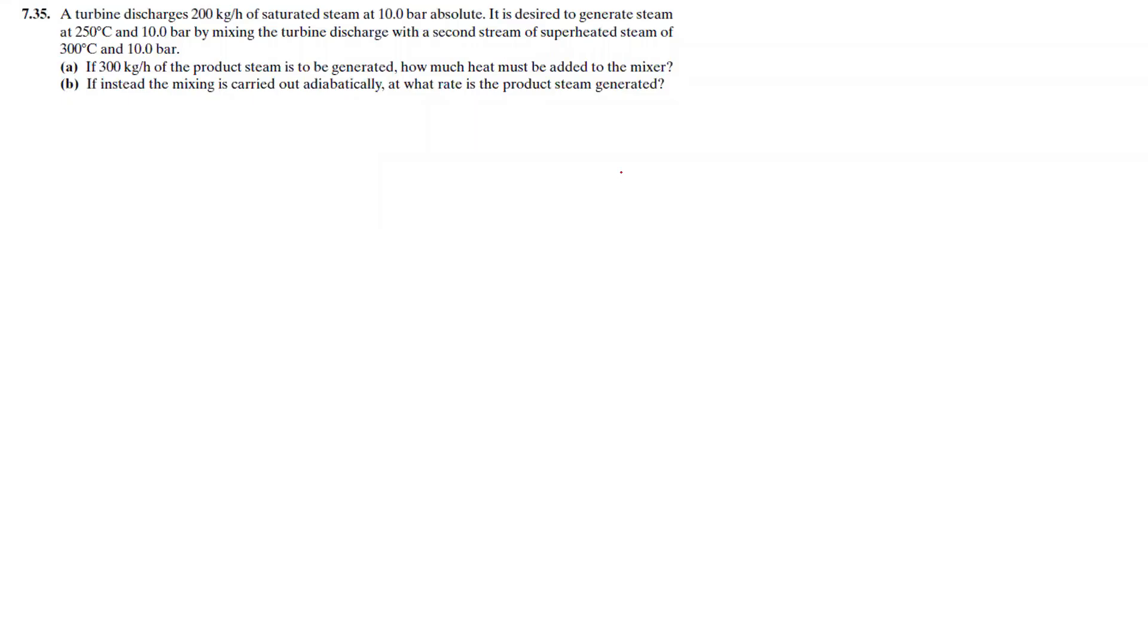Problem 7.35. A turbine discharges 200 kg per hour of saturated steam at 10 bar absolute. It is desired to generate steam at 250 degrees Celsius and 10 bar by mixing the turbine discharge with a second stream of superheated steam of 300 degrees Celsius and 10 bar.